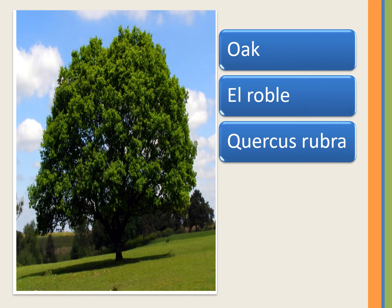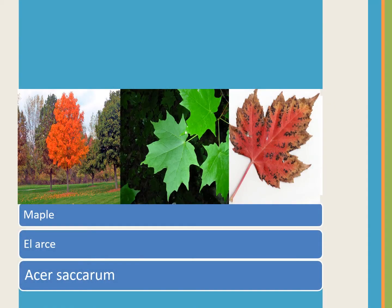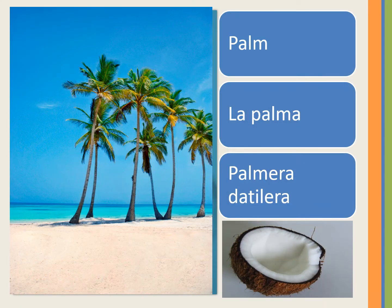In English we have oak, in Spanish el roble — I'll include the definite article as it may be masculine or feminine — and the scientific name Quercus rubra. Maple, el arce, Acer saccharum. Palm, la palma, Palmera datilera.